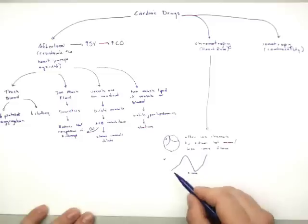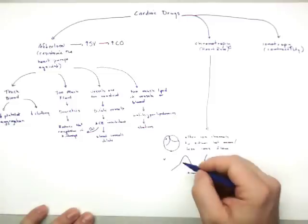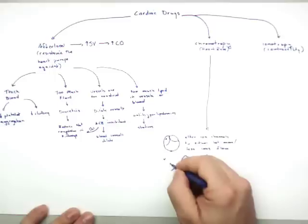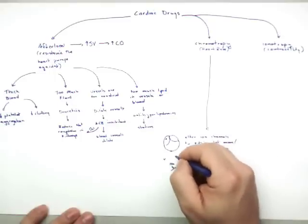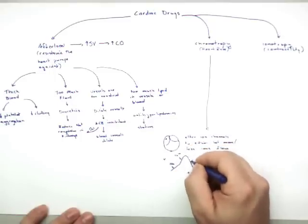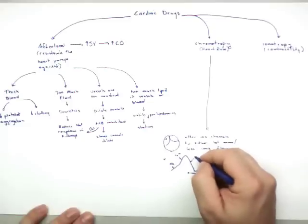And there's three ion channels that are important here. And this is calcium. This is calcium. And this is potassium.